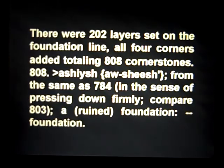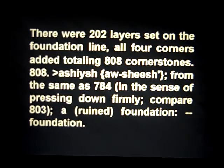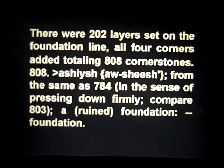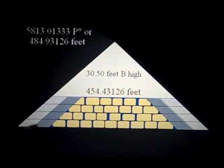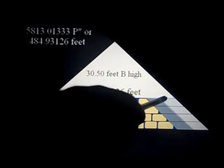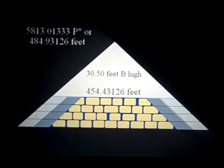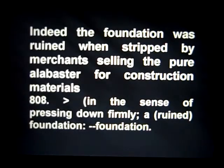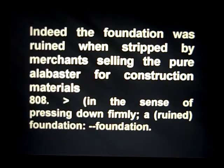There were 202 layers set on the foundation line, all four corners added totaling 808 cornerstones. 808, from the same root as 784, means 'a ruined foundation' or simply 'foundation.' Here are the cornerstones, all stacked to support the 30.50-feet-high capstone. Indeed, the foundation was ruined when it was stripped by merchants selling the pure alabaster for construction materials — that is why it became a ruined foundation.